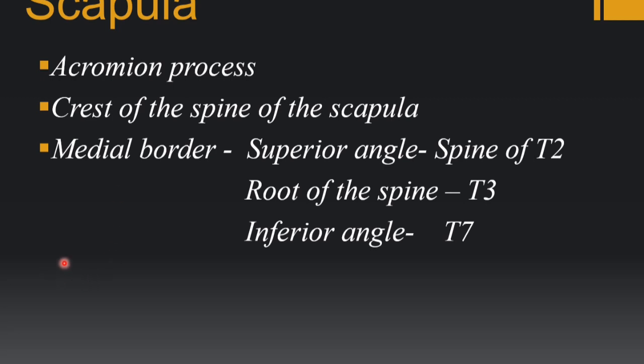Coming to the scapula, we can find the acromion process, the crest of the spine of the scapula, and three angles. The vertebral levels are very important. The medial border is also called the vertebral border. For detailed osteology of the scapula you can find that video in my channel. The superior angle of the scapula lies at the level of T2, the root of the spine of the scapula is at the level of T3, and the inferior angle of the scapula is at the level of T7.